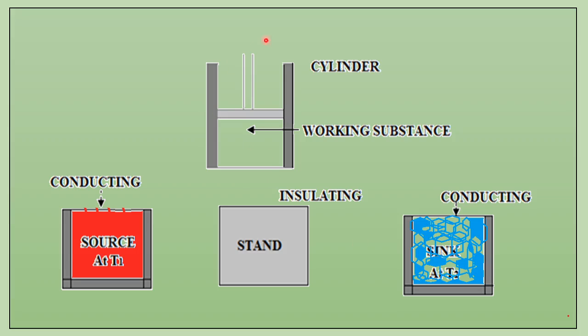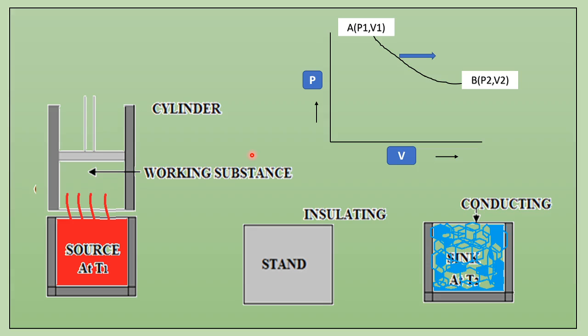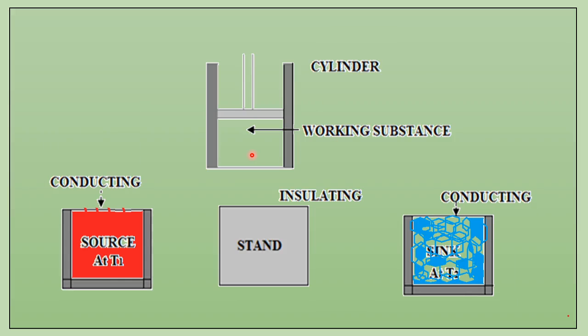The fourth one is the cylinder. This cylinder contains the working substance. The cylinder is fitted with a movable piston. Its walls are non-conducting and the base is conducting. It is made of non-conducting material and contains working substance like an ideal gas or vapor.